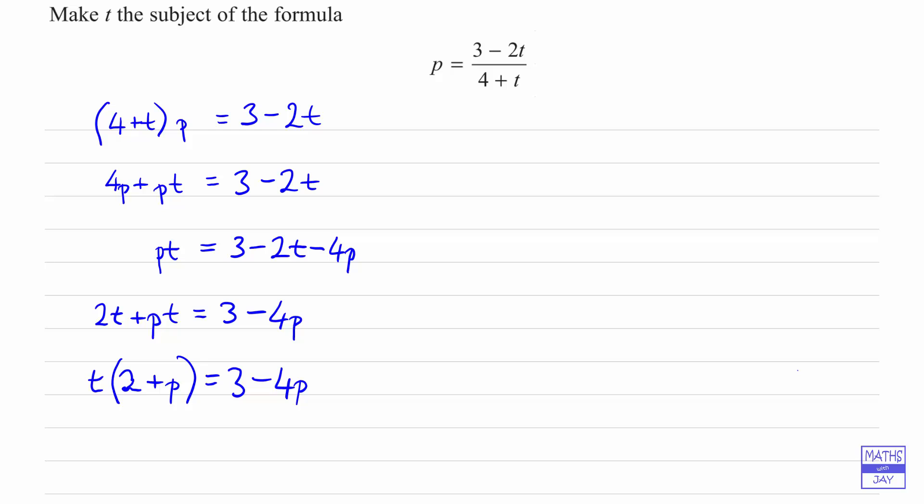And finally we can see that t is going to be, if we divide both sides by 2 plus p, it's going to be 3 minus 4p over 2 plus p.